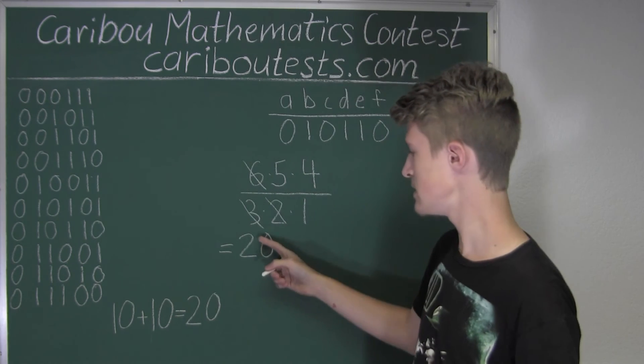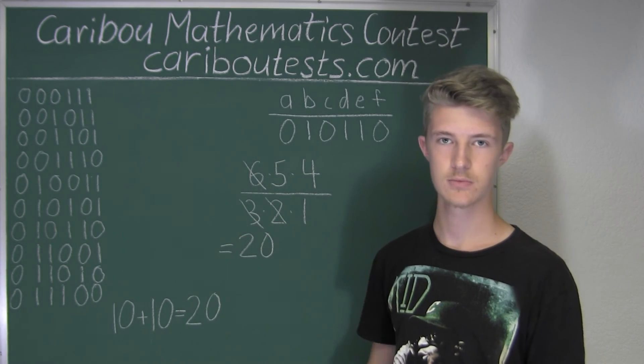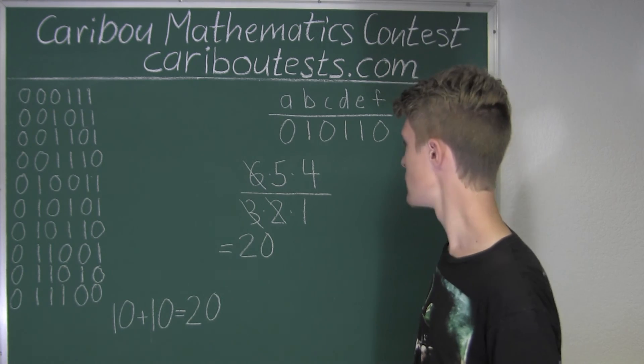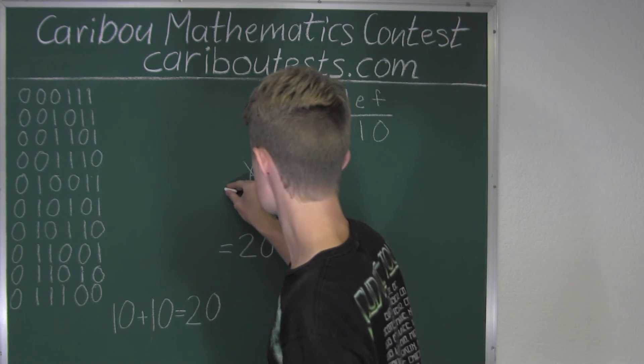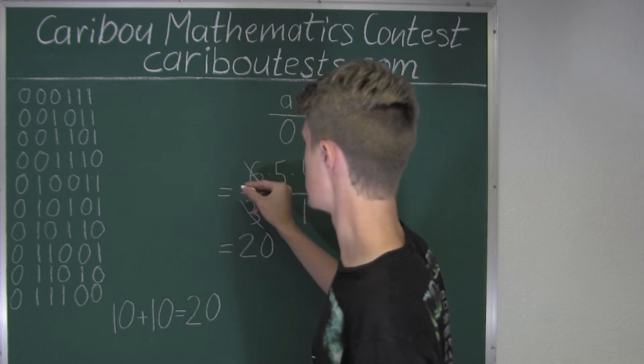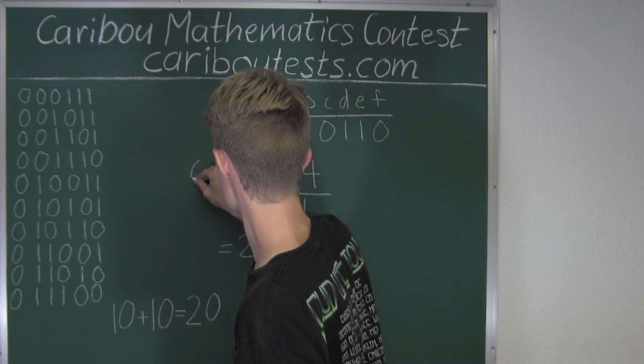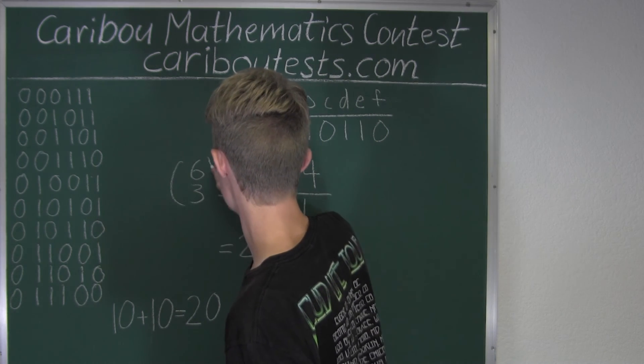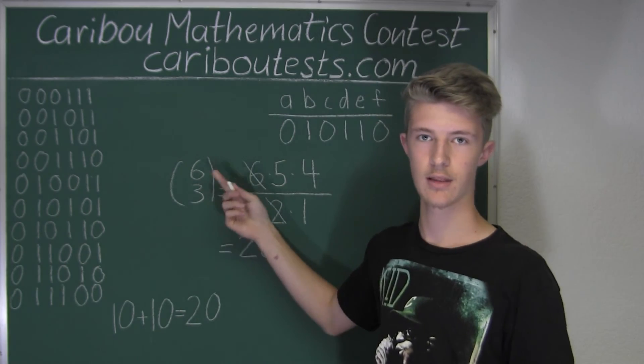So as we can see, we found the same answer with just two different methods. Now this is also known as six choose three, which can be written like that.